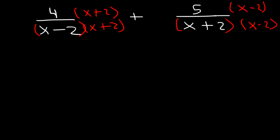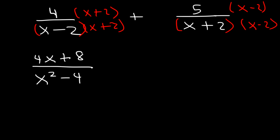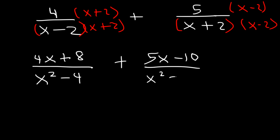Distributing 4 to x plus 2 gives 4x plus 8. FOILing x minus 2 times x plus 2 gives x squared minus 4. Distributing 5 to x minus 2 gives 5x minus 10. Now that we have the same denominator we can add the numerators: 4x plus 5x is 9x, and 8 plus negative 10 is negative 2.